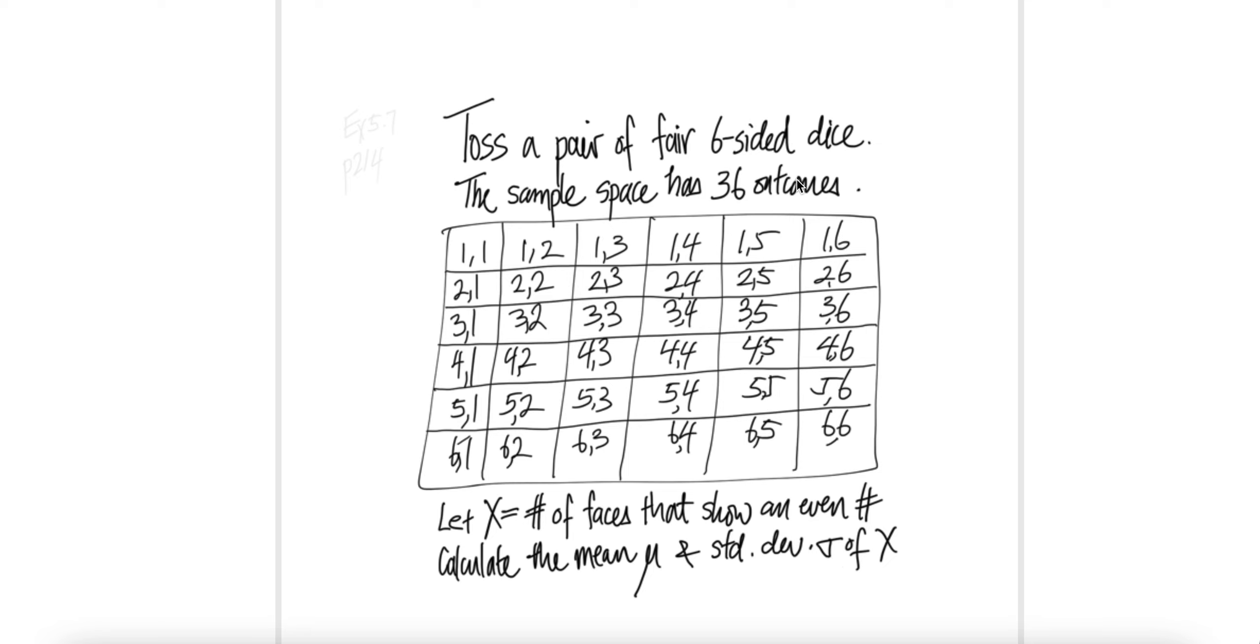You get 36 outcomes because one dice is six-sided and then you toss two. So the first location here represents the value of the first die, this one's the second die. Here first die shows four, second die shows four. Here first die shows a six and the second die shows a three. Here first die shows a one and the second die shows a six.